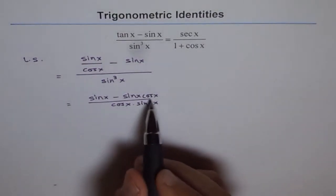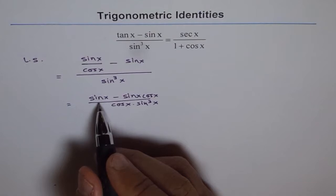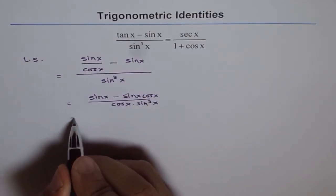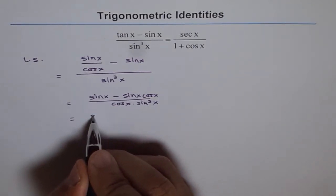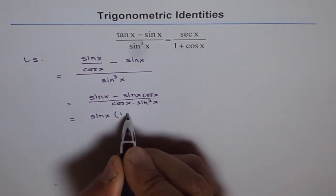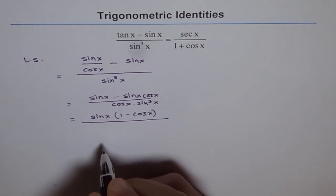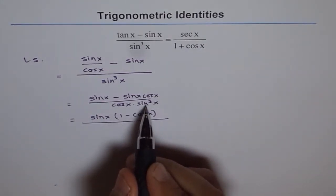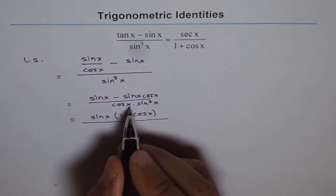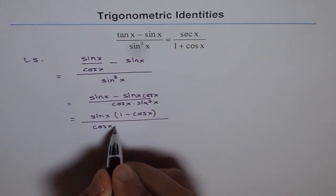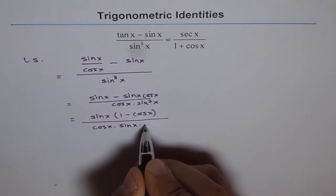In the numerator we can take sin x as a common factor and simplify. We get sin x times (1 minus cos x) in the numerator, and cos x times sin x in the denominator. One of the sin x terms cancels out. We write sin cube x as sin x times sin square x so we can cancel the sin x.